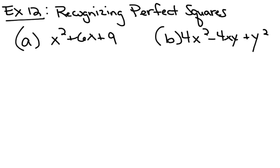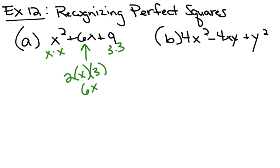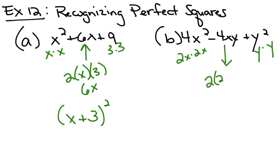Recognizing perfect square trinomials: they're very easy to factor if you can identify them. If the first and last terms are perfect squares, and the middle term is 2 times the square root of the first term times the square root of the last term, then it's a perfect square trinomial. It factors into either a plus b squared or a minus b squared. x squared plus 6x plus 9 is going to factor into a plus b squared. In part b, with perfect square first and last terms, and the middle term satisfying that condition, it factors into a minus b squared.